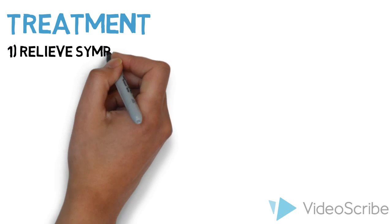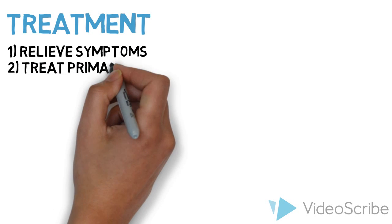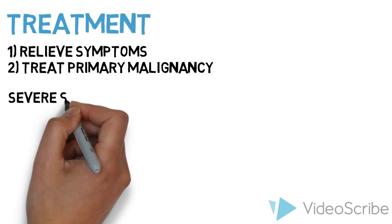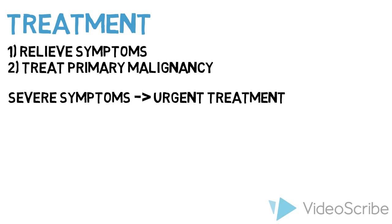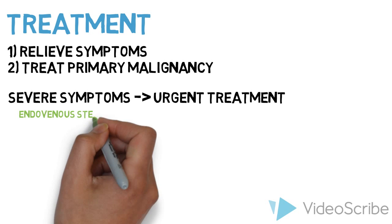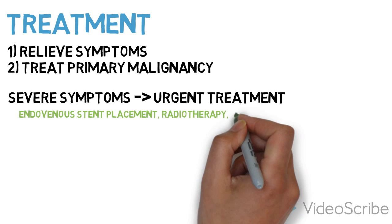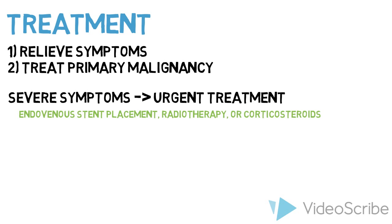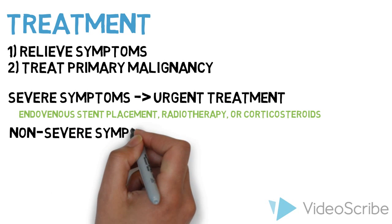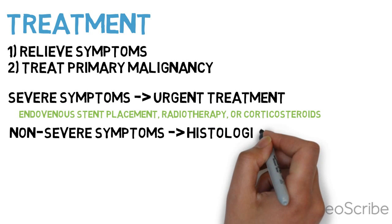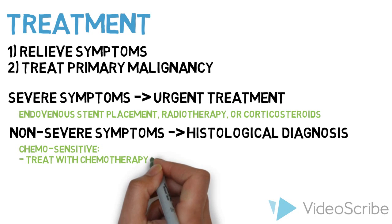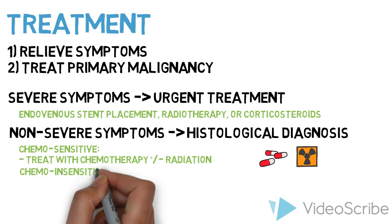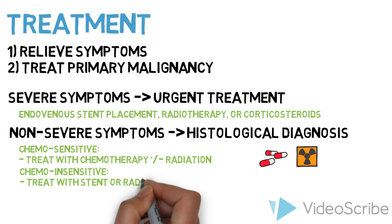The main goals of therapy for malignancy-related SVC syndrome are to relieve symptoms and to treat the primary malignancy. Severe symptoms such as central airway obstruction, respiratory compromise, or CNS depression require urgent treatment with endovenous stent placement, radiotherapy, and/or corticosteroids. Non-severe symptoms require a histological diagnosis to determine potential responses to treatment. Chemosensitive malignancies can be treated with chemotherapy with or without radiation, and chemo-insensitive malignancies can be treated with a stent or radiotherapy.